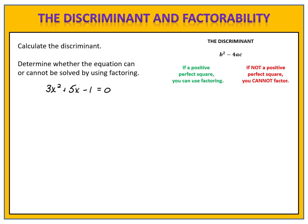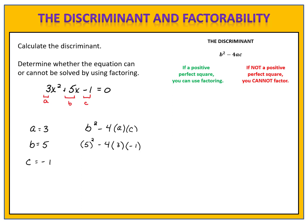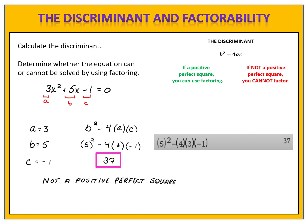I'm now ready to identify the values of a, b, and c. A is the number in front of the x squared, b is the number in front of the x, and c is the constant term. So a is 3, b is 5, and c is negative 1. I'm now ready to use my formula, b squared minus 4ac. b squared is 5 squared, minus 4, times a which is 3, times c which is negative 1. You can take this and type it directly into your calculator. The discriminant is 37. 37 is not a positive perfect square, which means we cannot solve by factoring. In order to solve this equation, you'll have to use another method, such as completing the square or the quadratic formula.